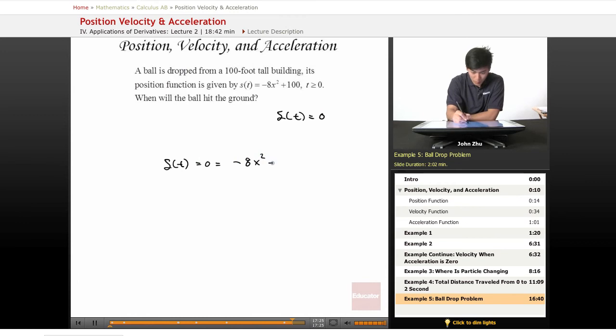Negative 8x squared plus 100. So negative 8t squared plus 100. So solving for t, we get t equals positive and negative square root of 100 over 8.